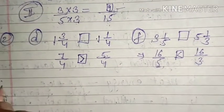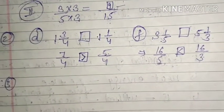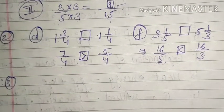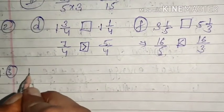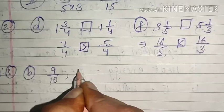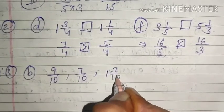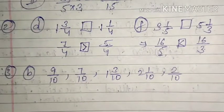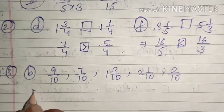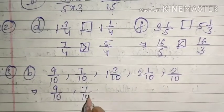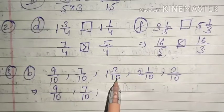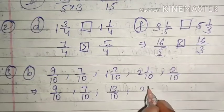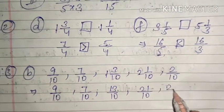Question number 3: some numbers are given — some proper, some improper, some mixed — and we have to arrange them. Let's see part B: 9 upon 10, 7 upon 10, 1 and 3 by 10, 2 and 1 by 10, 2 by 10. First, convert mixed fractions to improper: 9 upon 10 stays, 7 upon 10 stays, 1 into 10 plus 3 gives 13 upon 10, 2 into 10 plus 1 gives 21 upon 10, and 2 upon 10 stays.